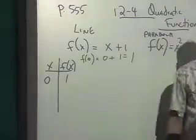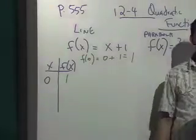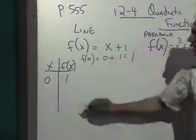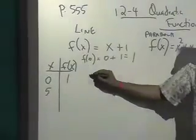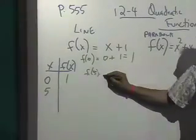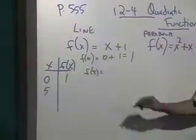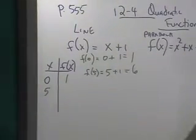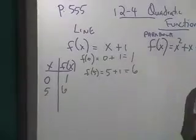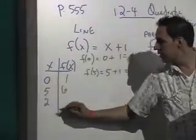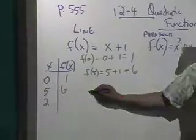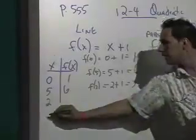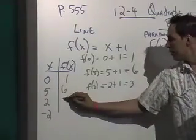Let's pick another point. Somebody give me a point — not a big one. Five. What's f of five? What's the value of the function at five? We'll put 5 in for x, and it equals six. Now let's take f of 2: 2 plus 1 equals 3. Let's take negative 2 — negative 2 plus 1 is equal to negative 1.